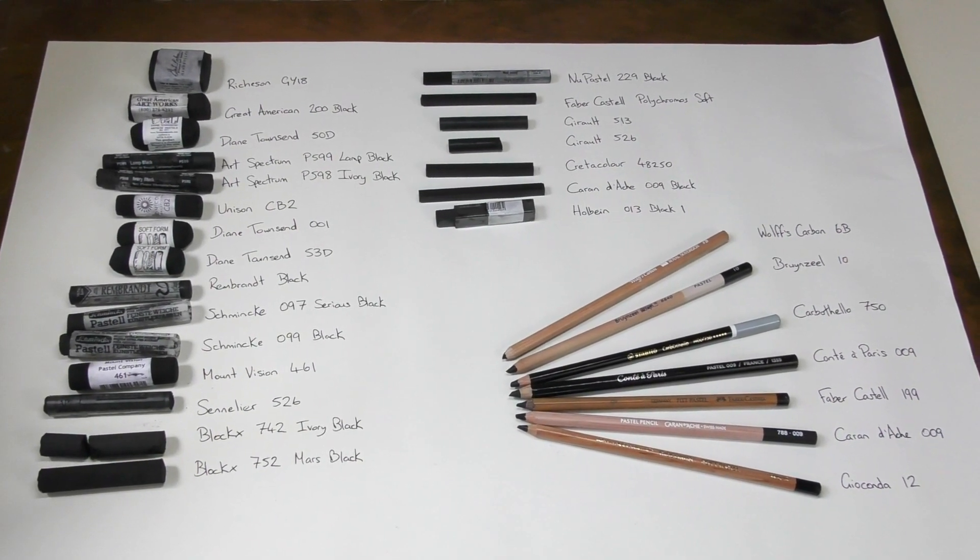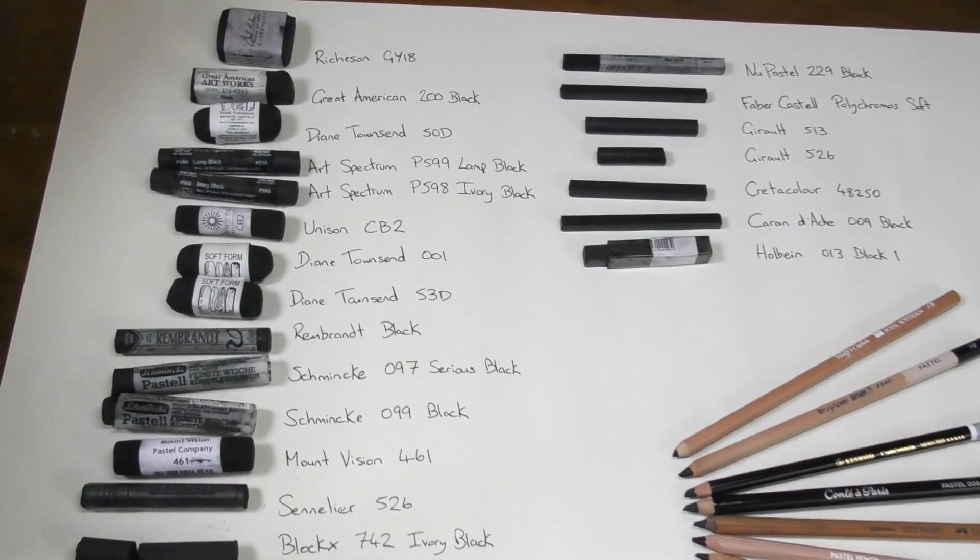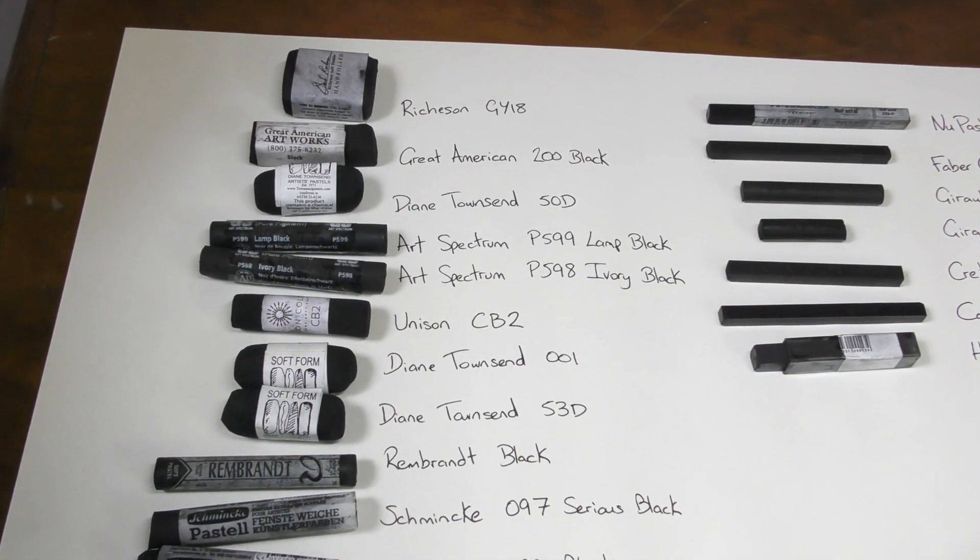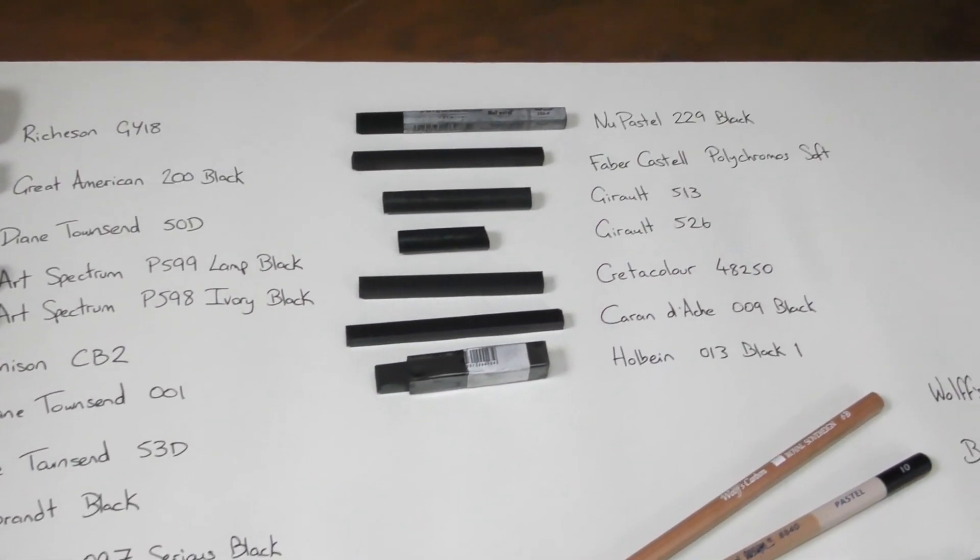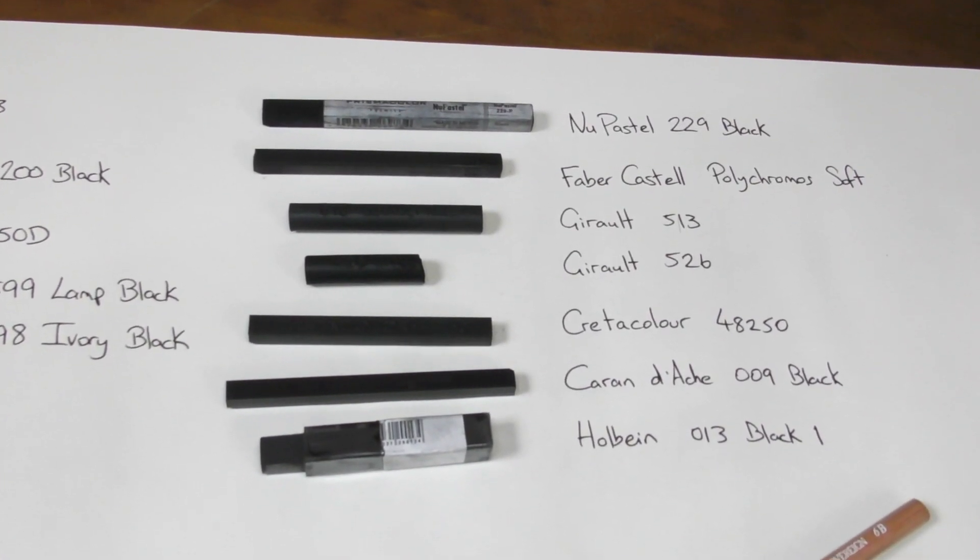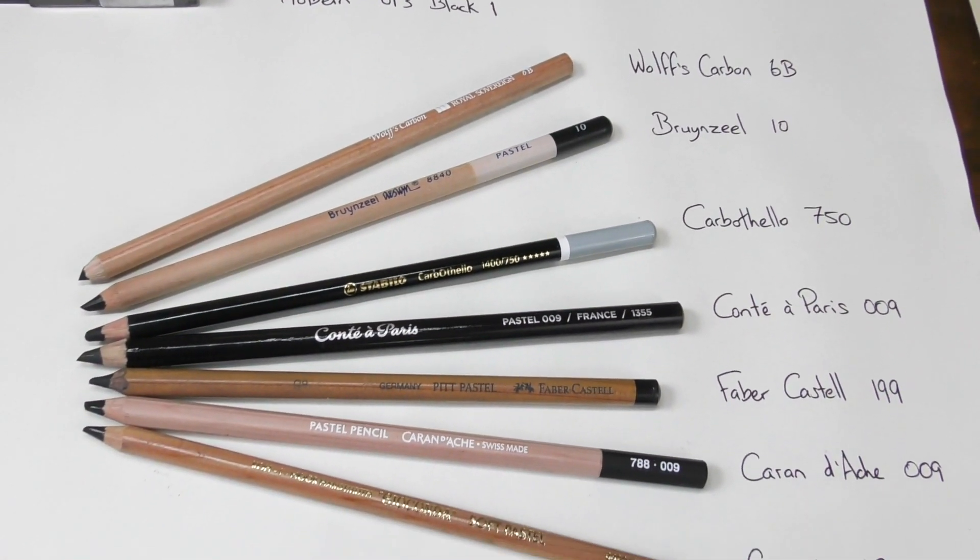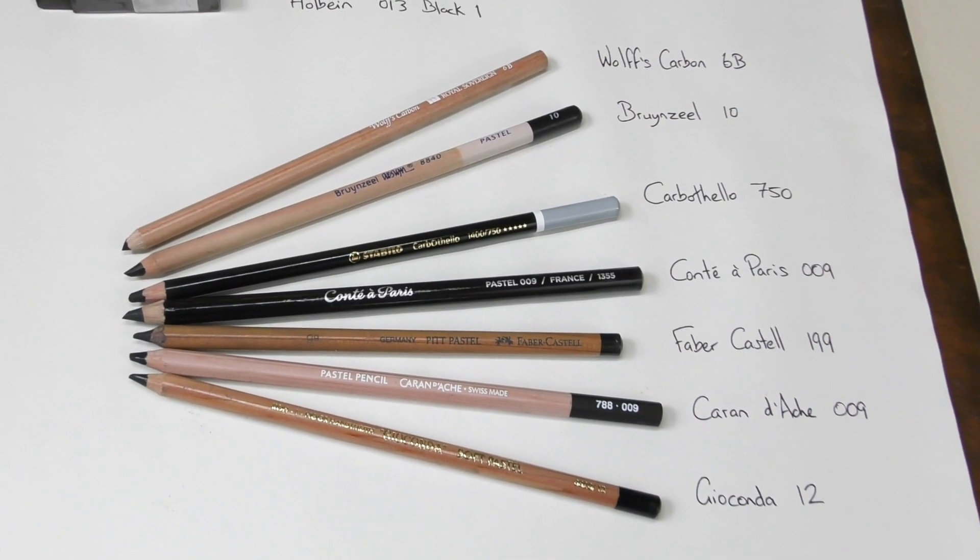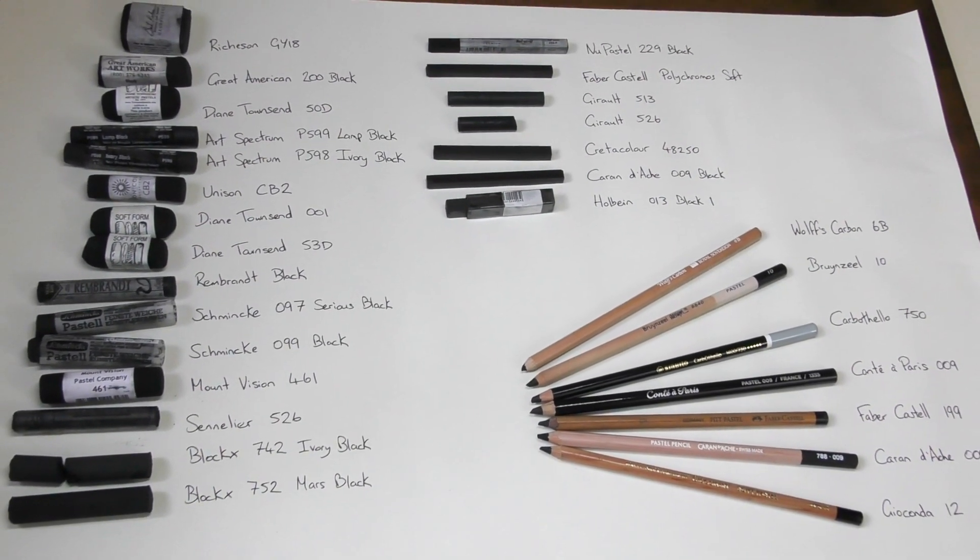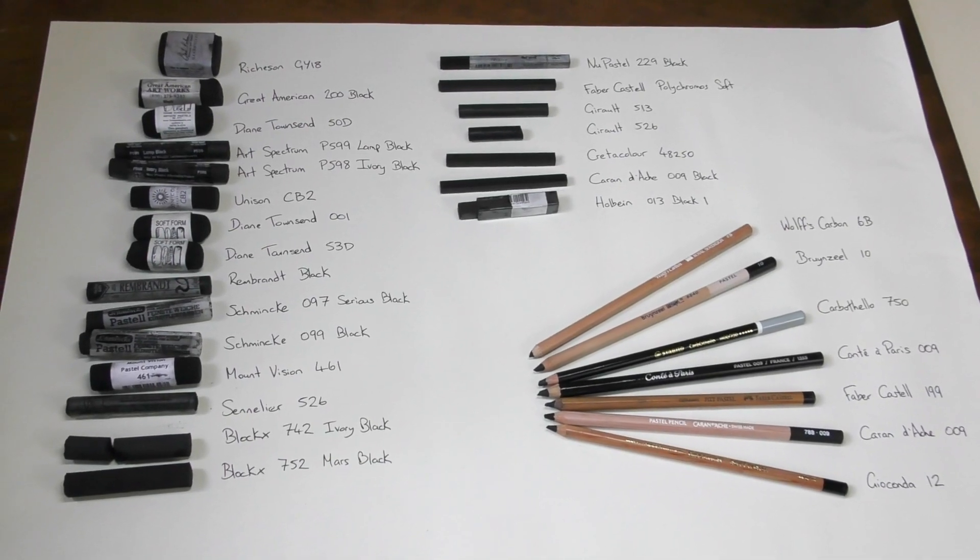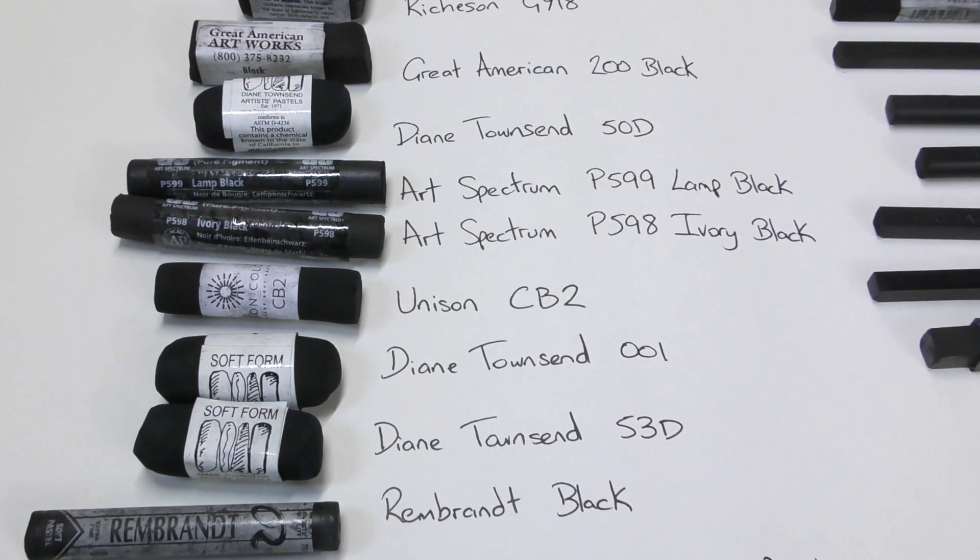Just to explain, the medium of soft pastel comes in a few different forms. Firstly, as you would expect, the softest pastels, these bigger sticks, softer in texture. But you can also get soft pastel in a harder form, these smaller, harder pastels, usually with square edges. And lastly, you can also get pastel pencils, as you would imagine, the hardest form of soft pastel. So what I'm going to do today is try and find the winner from each of these categories, and then try and decide overall which of these gives the darkest, blackest black.